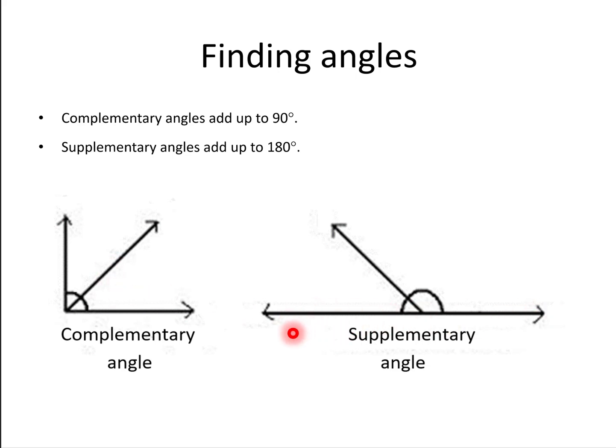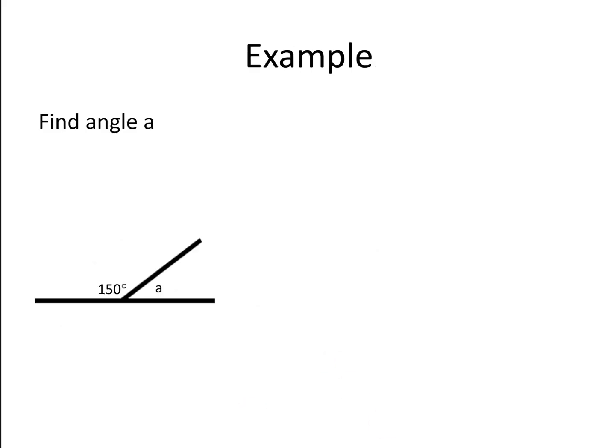Supplementary angles add up to 180 degrees. Let's look at an example. Find angle A. Well, along here is a straight line. Therefore, 150 plus A must equal 180. Because the full thing equals 180, 180 take 150 is 30. So taking that away from the whole gives me 30 degrees. So A must be 30, giving a total of 180 for the straight line.